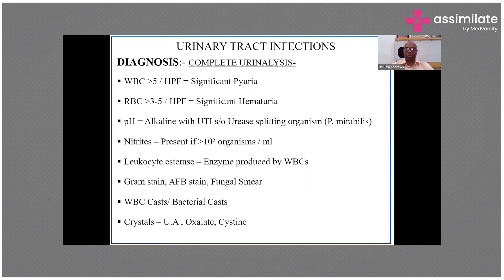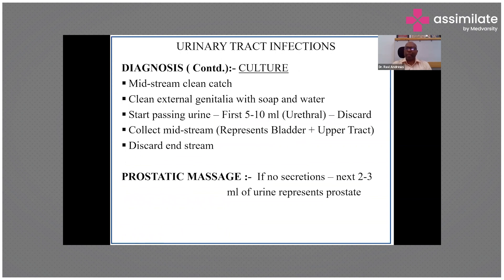If you see WBC casts, you are likely dealing with pyelonephritis. Stone disease can cause urinary tract infection — common stones involve uric acid, oxalate, and calcium. If uric acid or oxalate crystals are found in urine alongside a UTI, there is likely a stone somewhere requiring further evaluation. The most important test — the gold standard to confirm UTI — is urine culture, considering colony counts in symptomatic vs. asymptomatic patients, suprapubic aspirations, and catheter samples.